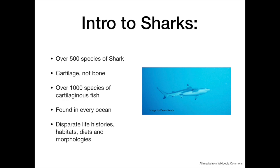Sharks are a disparate group of aquatic and marine organisms in the class Chondrichthyes, which is also shared with rays and chimeras. There are over 500 species of shark, including two species of saw shark that were discovered a matter of weeks ago.